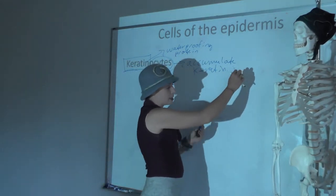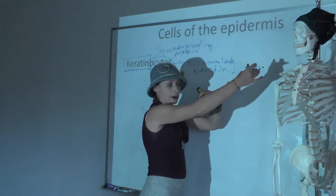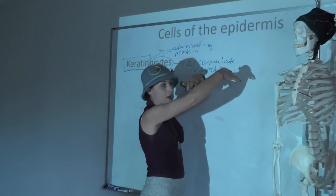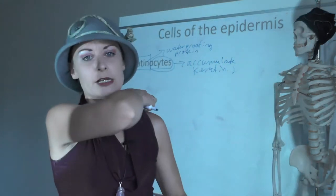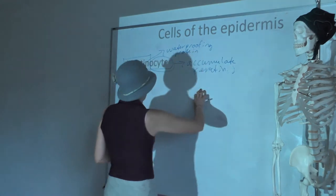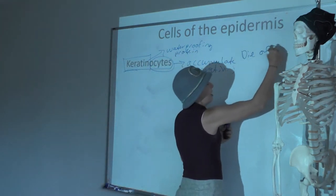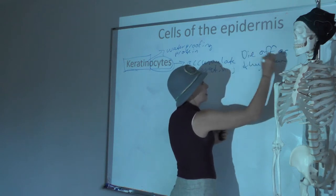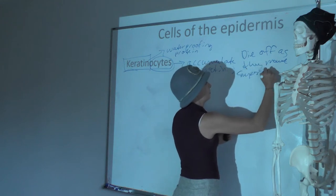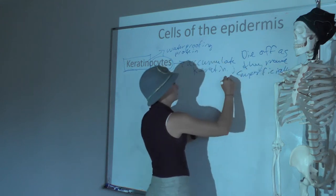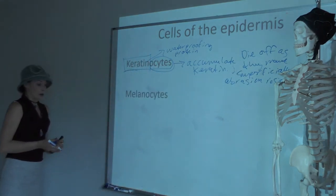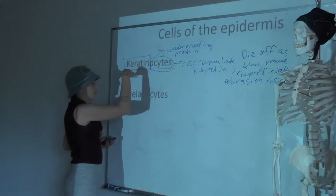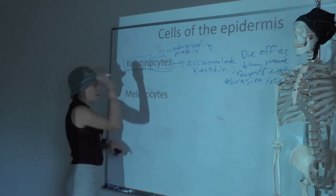Another thing about keratinocytes: their function is partly to die. They accumulate a lot of protein and then die off as they reach the superficial surface so we can readily slough those cells off. If you're scratching your epidermis, you don't want those cells to be alive. So keratinocytes die off as they move superficially, and this gives us abrasion resistance.